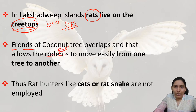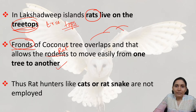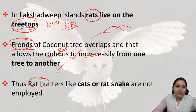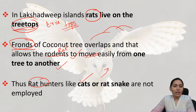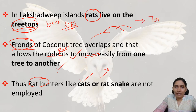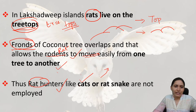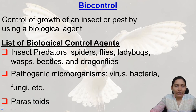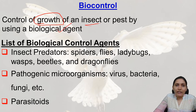The rat population — which are rodents — can move easily from one tree to another. That is why conventional rat hunters like cats or rat snakes are not employed, as it is not easy for them to catch rats living and traveling at the treetops. Now, bio-control means the control of growth of an insect or a pest using a biological agent.